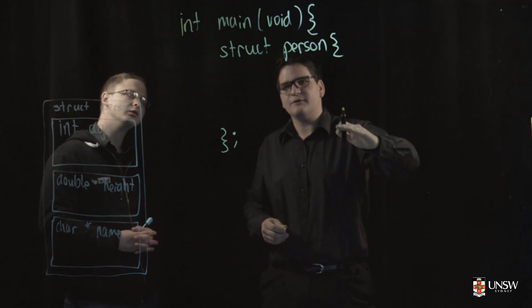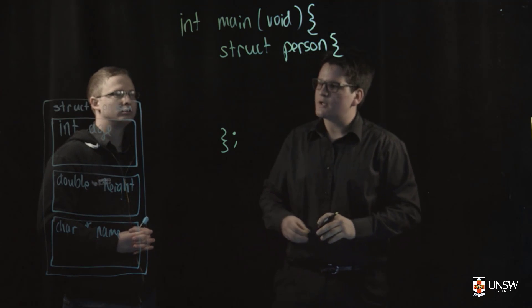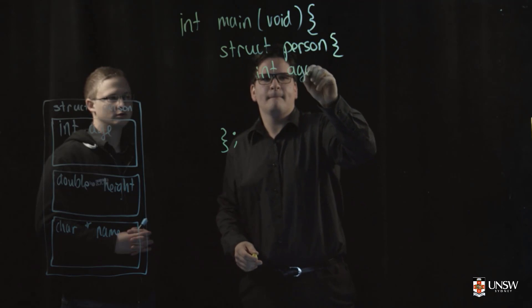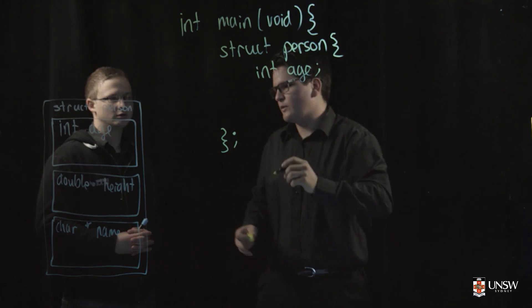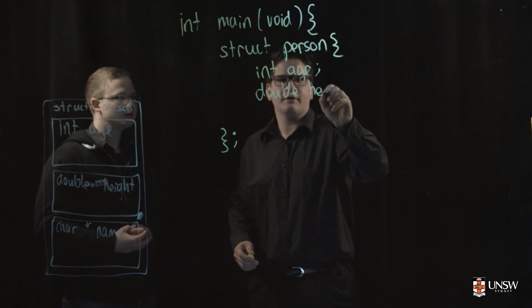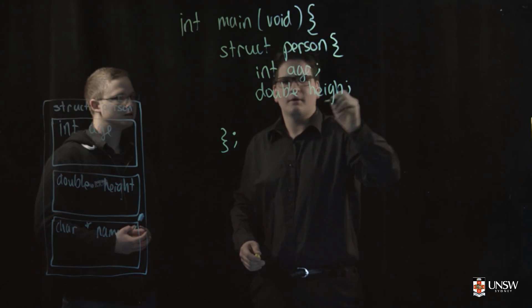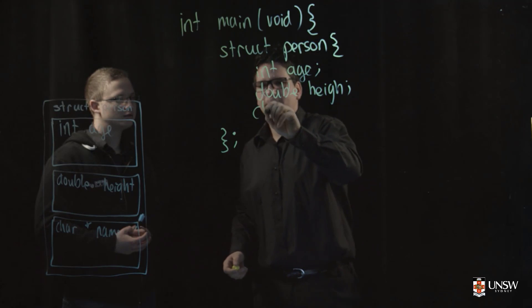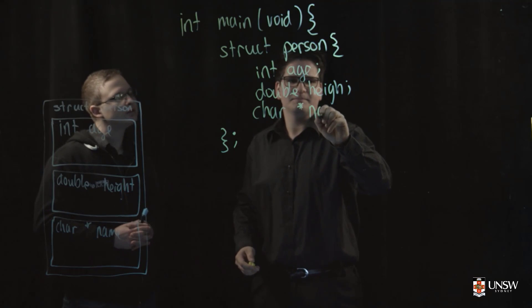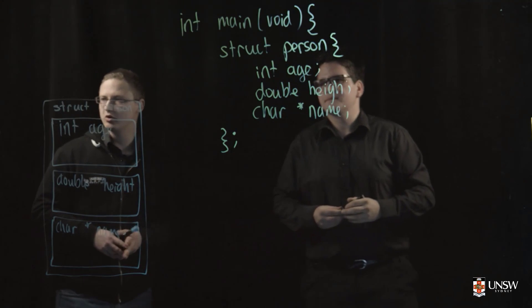And so now we need to list the fields that are inside the structure. So I'll just write down int age. And then we have a double height. We're writing the code that we want to group together. Yep, exactly. And then we have a char star name. Sorry, not code, variables. Yep. All right, cool.